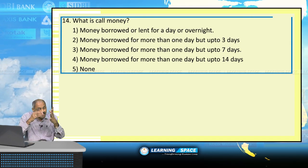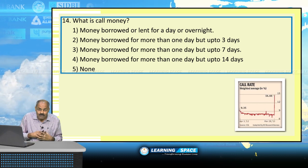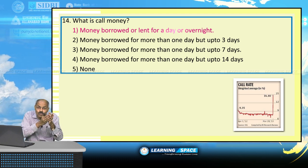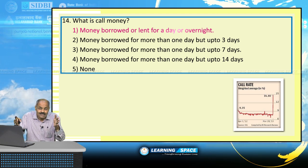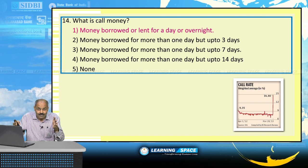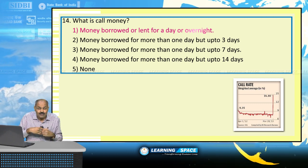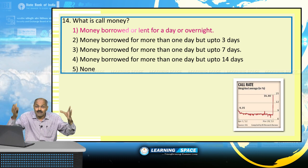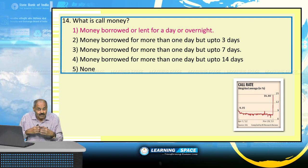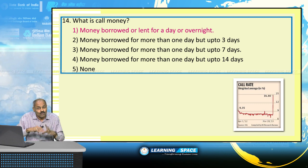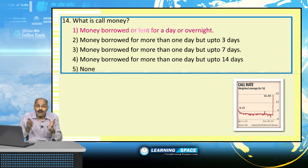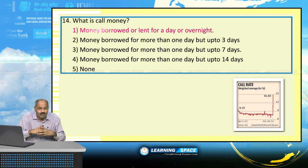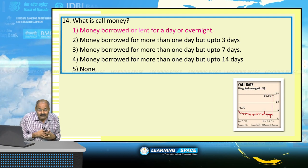Call money is money borrowed or lent for a day or overnight. If money is borrowed for one day, it is call money. If borrowed for 2 to 14 days, it is notice money. Strictly speaking, call money is for one day and notice money is for 2 to 14 days, but broadly people refer to the short-term borrowing market as the call money market.